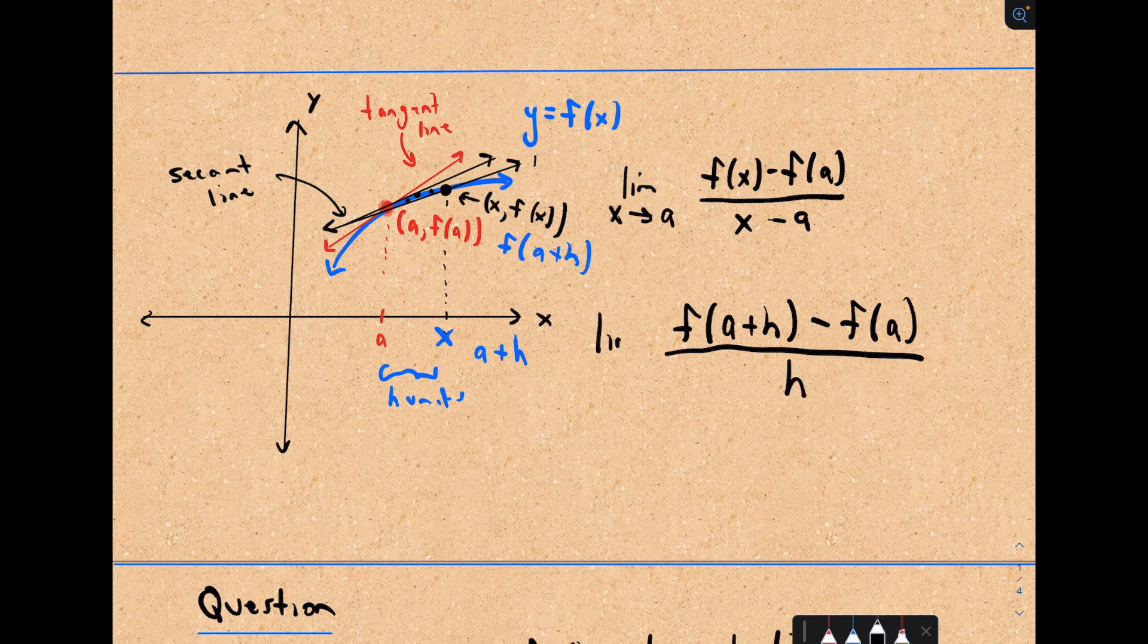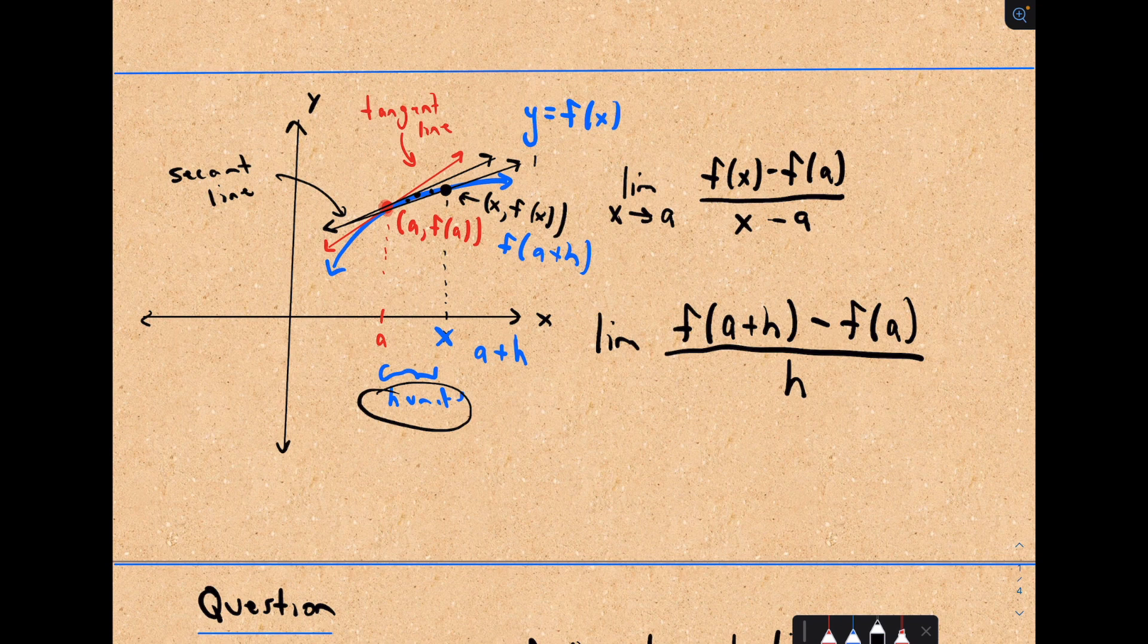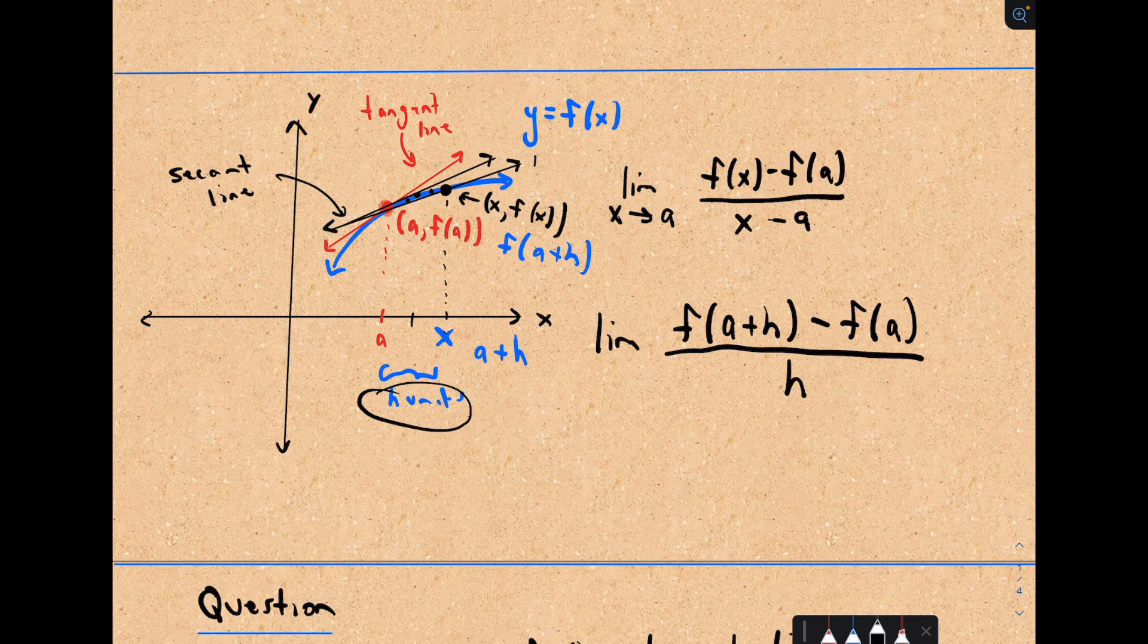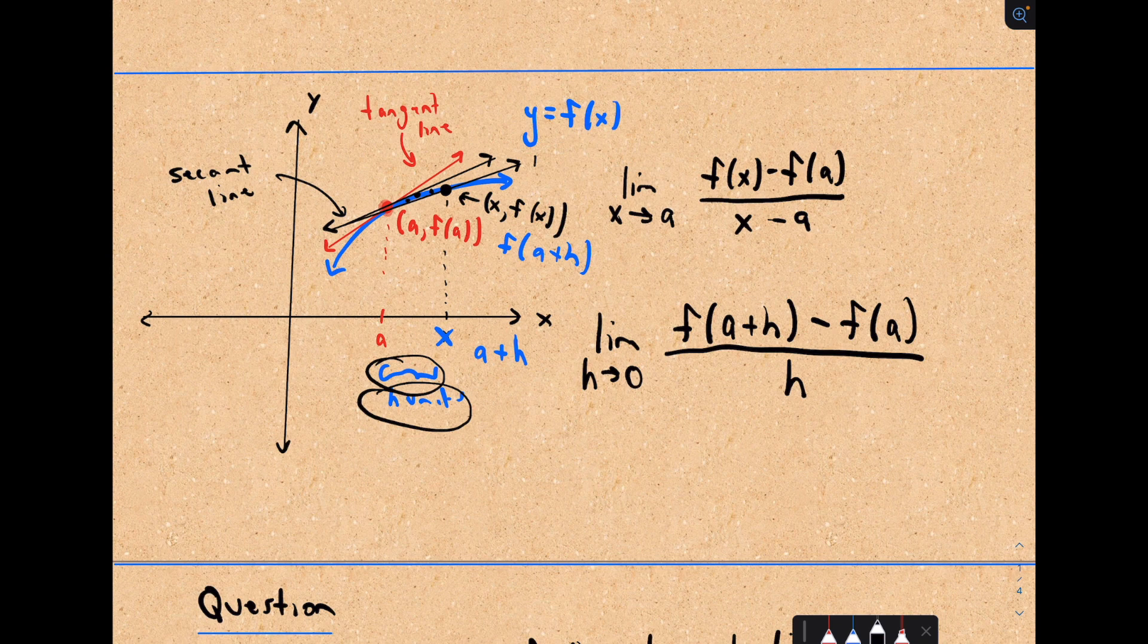Now we still have to take a limit. But the way that we would make our secant line get closer and closer and closer, h tells you how far you're moving over. I want h to not be very much. I want it to get smaller and smaller and smaller. So in that case, to make that happen, I would have to say h gets closer and closer to zero. This little interval is shrinking down, and that's bringing my x coordinate closer.